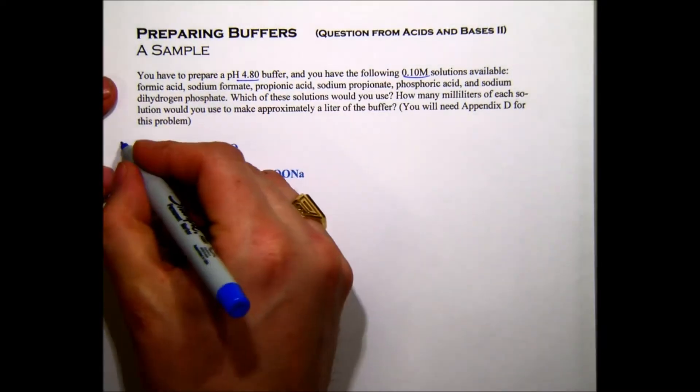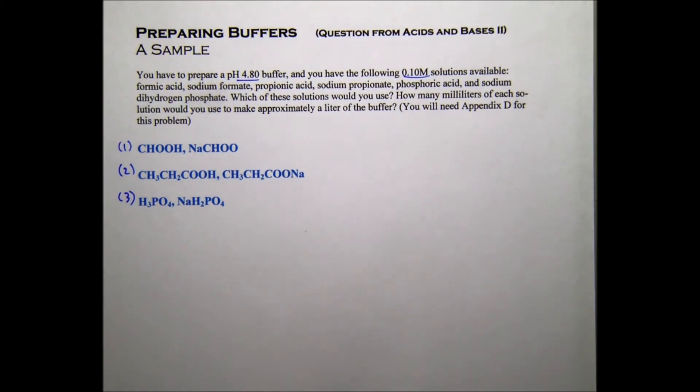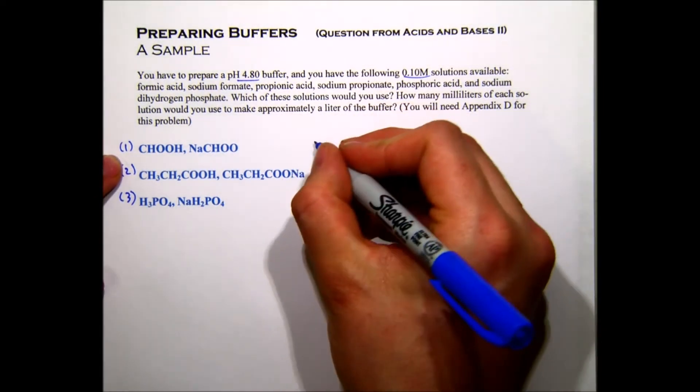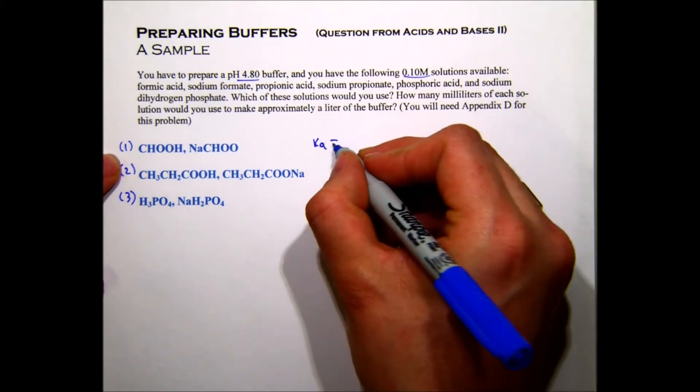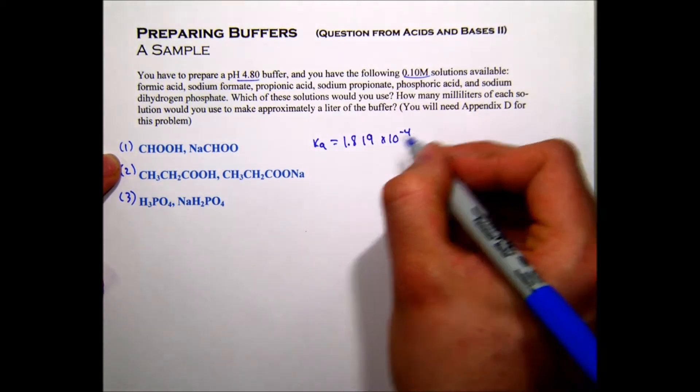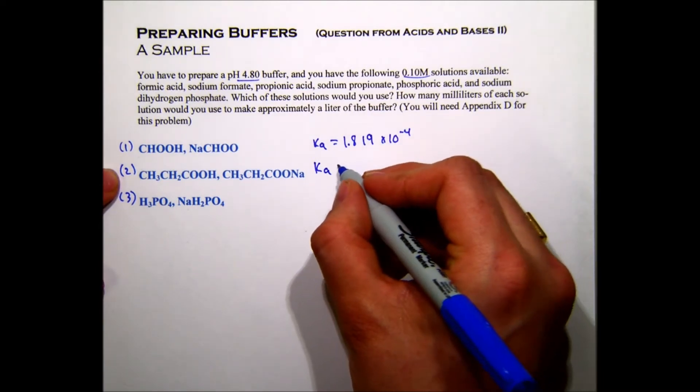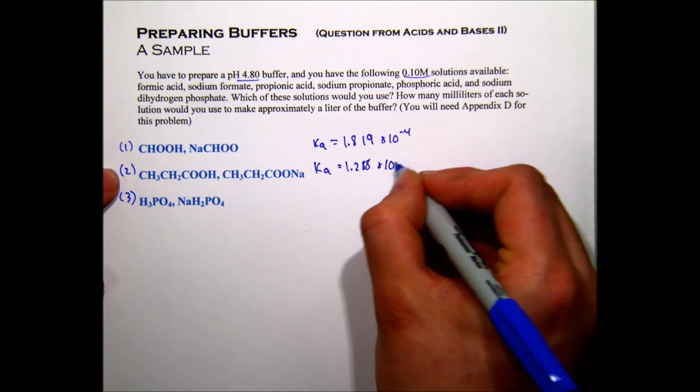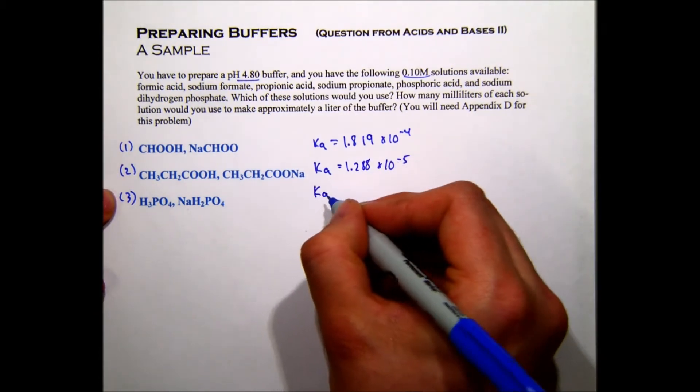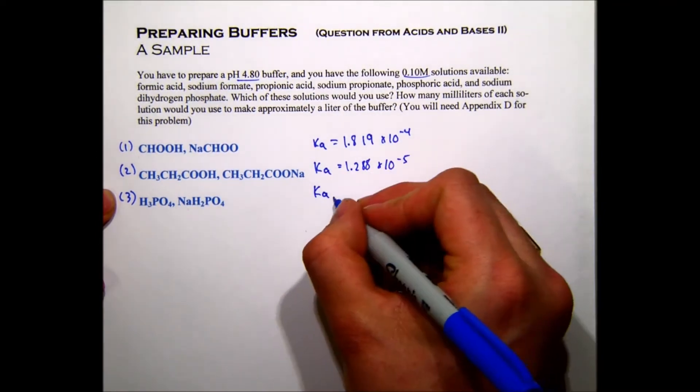It says which of those three solution pairs should we use to make the buffer? So what we should do is go to appendix D in our textbook and find out what the Ka values are. For formic acid, Ka is 1.9 times 10 to the negative 4. The Ka for propanoic acid is 1.28 times 10 to the negative 5.